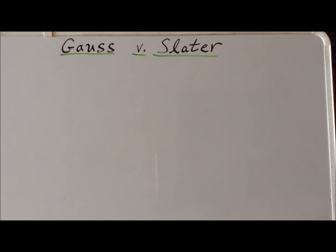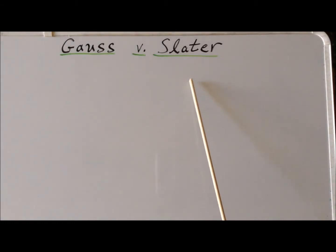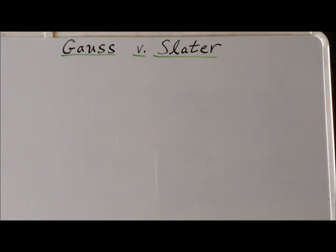Hello, in this corner, representing Germany in the 19th century, Karl Friedrich Gauss. In this corner, representing the United States in the 20th century, John C. Slater. In this video, we are going to compare and contrast two mathematical formalisms that are used to represent atomic and molecular orbitals: Gaussian-type orbitals and Slater-type orbitals.